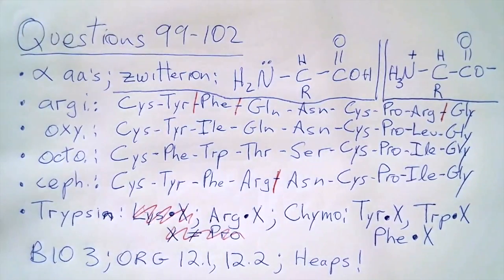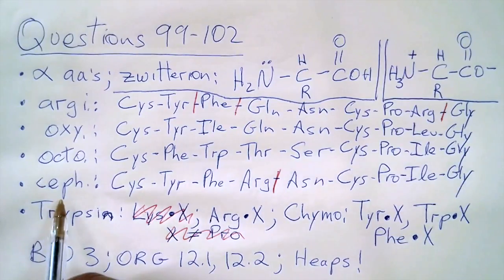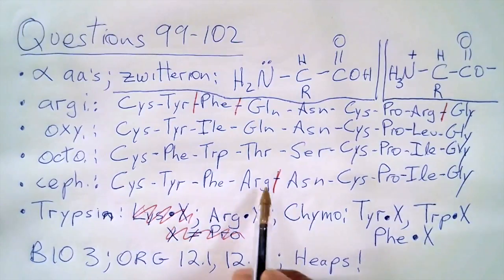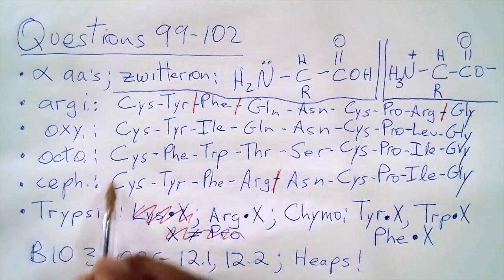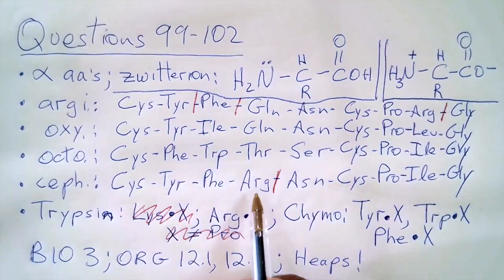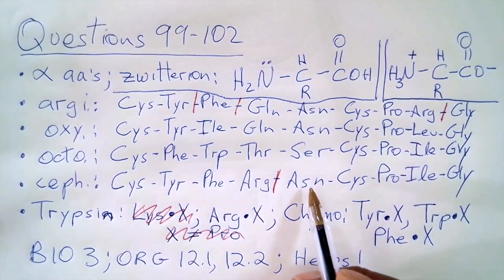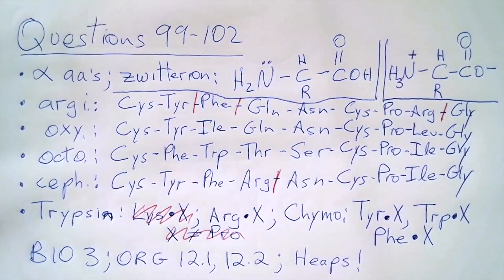Let's look at question 101: What are the products when the cleavage of cephalotocin is facilitated by trypsin? So cephalotocin, trypsin - we already did it. What do we get? We get one, two, three, four amino acids together - that's a tetrapeptide - and one, two, three, four, five amino acids together - that's a pentapeptide. So 101, the answer is D.